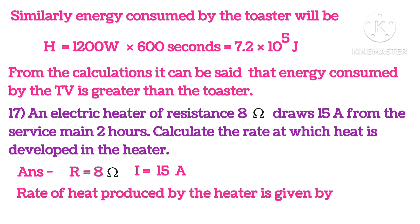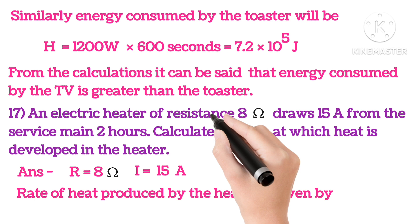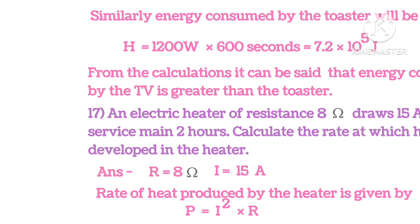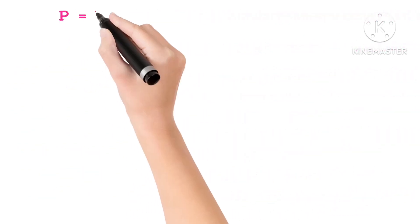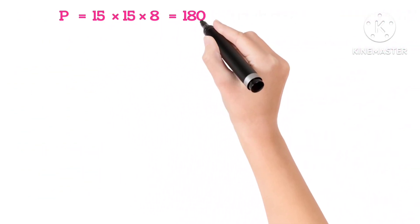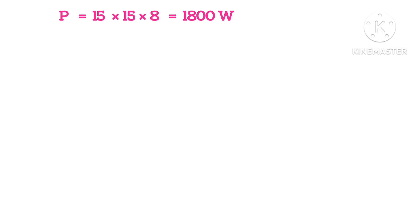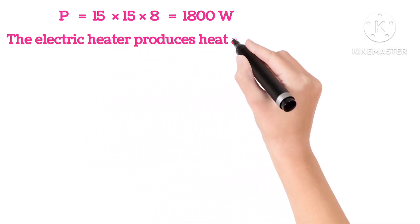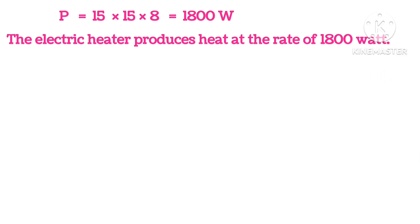So the rate of heat produced by the heater is given by P equals I squared into R. Now, putting the values, we get power equals 1800 watts. The electric heater produces heat at the rate of 800 watts.